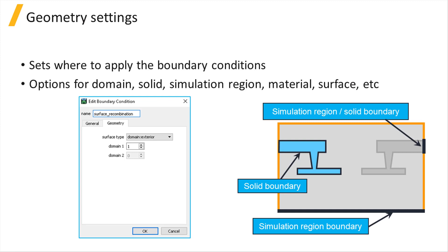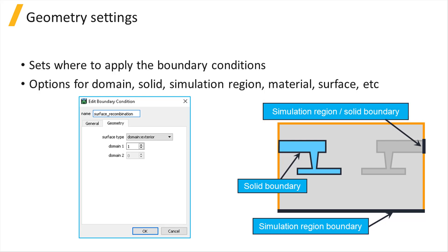In the property editor window of every boundary condition object, the geometry tab defines the location where the boundary condition object gets applied by using reference geometries. This can be at the interface between two materials, at the surface of a geometric solid, at a simulation boundary, or at the intersection of a solid and a simulation boundary. To get familiar with the concept and different types of reference geometries, please visit the reference geometries unit of this course.